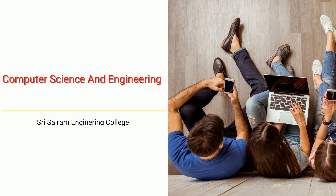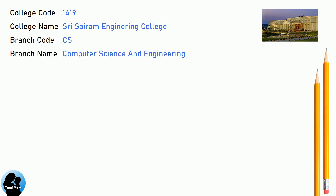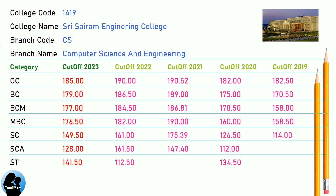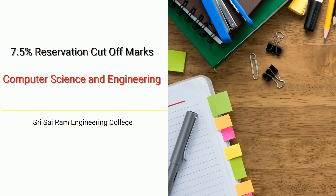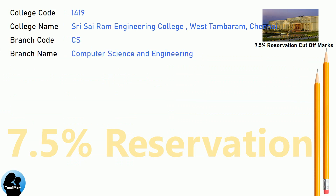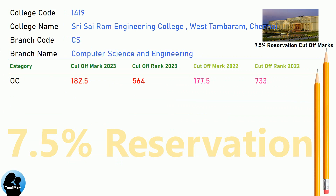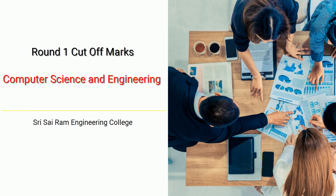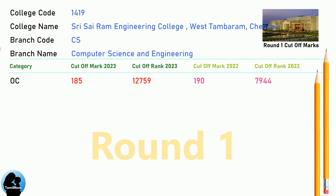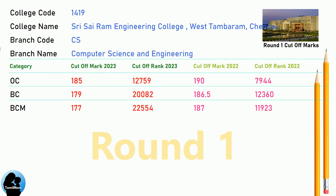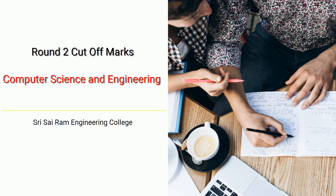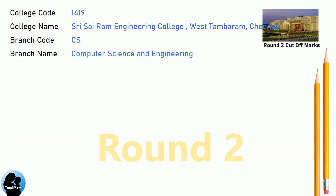DNA Cut-off for Shri Sairam Engineering College in Computer Science and Engineering. DNA 7.5 Reservation Cut-off for Shri Sairam Engineering College in Computer Science and Engineering. DNA Round 1 Cut-off for Shri Sairam Engineering College in Computer Science and Engineering. DNA Round 2 Cut-off for Shri Sairam Engineering College in Computer Science and Engineering.